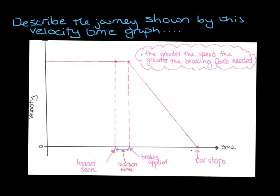So hopefully these are the sorts of things you've come up with. To start with, we're travelling at a constant velocity. Then suddenly the velocity starts to decrease. We can see because this line here is a straight line, not a curve, that the deceleration of the car must be at a constant rate.